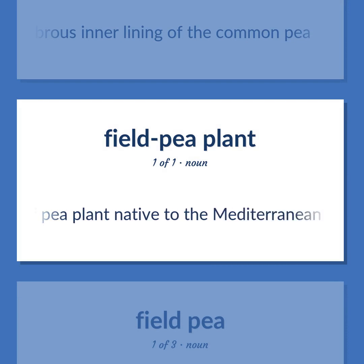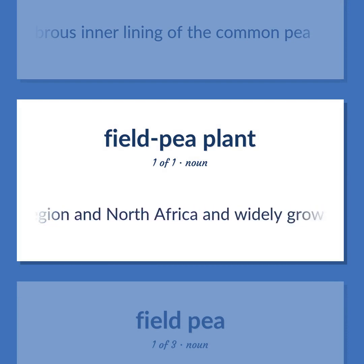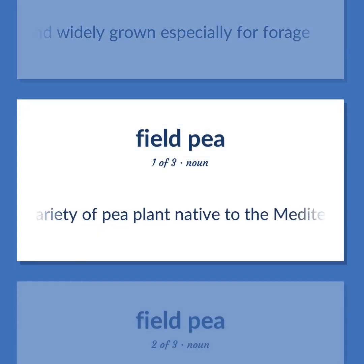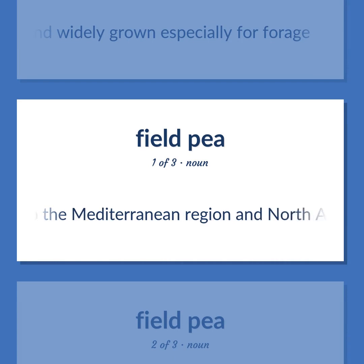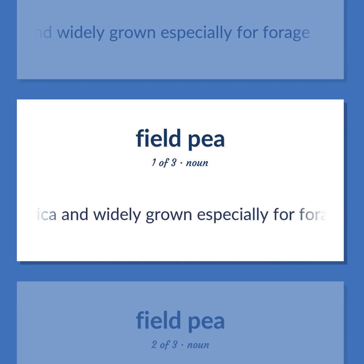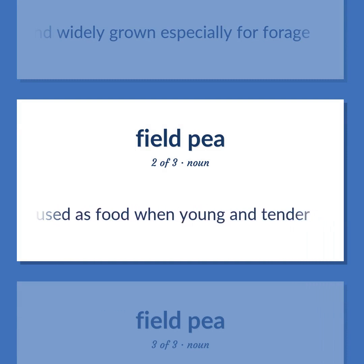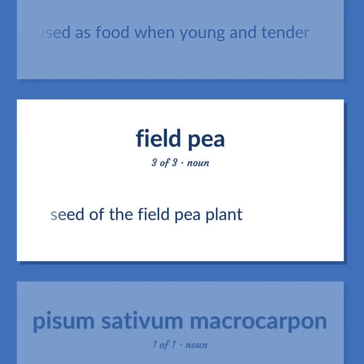A variety of pea plant native to the Mediterranean region and North Africa, widely grown especially for forage. A small seeded pea often used as food when young and tender; a seed of the field pea plant.